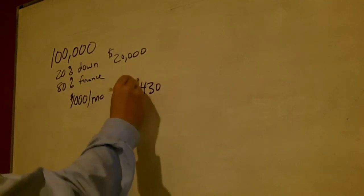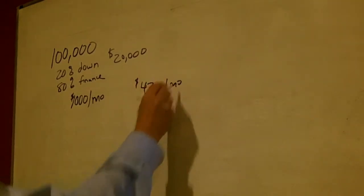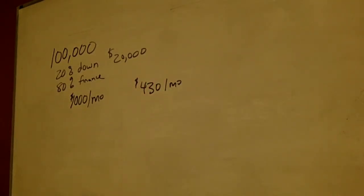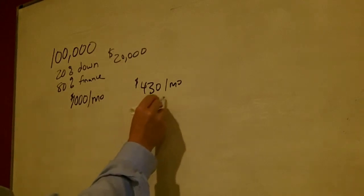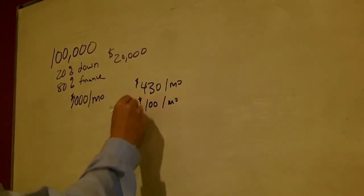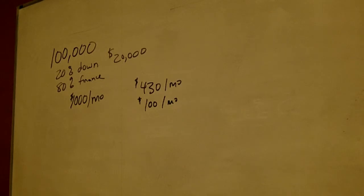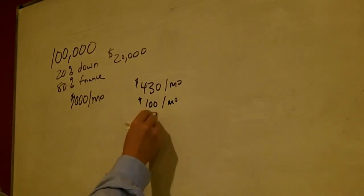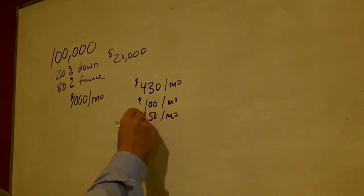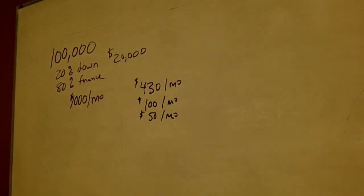your principal and interest payment is going to be $430 per month. If we estimate $1,200 a year for taxes, that's $100 per month. If we estimate $600 for insurance, that's another $50 a month. So that puts your total payment each month at $580.